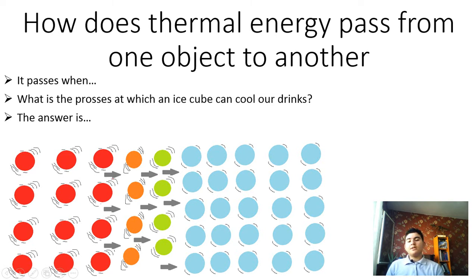As you can see in this picture, the red circles are our drink's molecules, and these arrows show the flow of energy or thermal energy from these molecules to the bluish circles on the right, which are the ice cube's molecules. The molecules that are in between with different colors are the same drink molecules that have given off their kinetic energy to the ice cubes and have become less energetic.